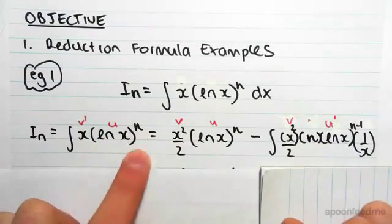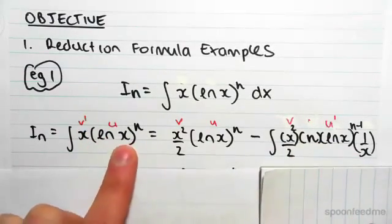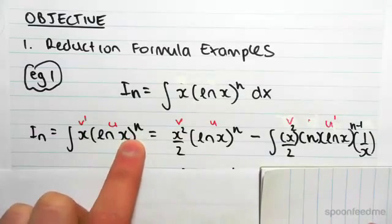So we have (ln x)^n, so we have to differentiate this. Now we're going to be using the chain rule here. So when we have something to the power of n,